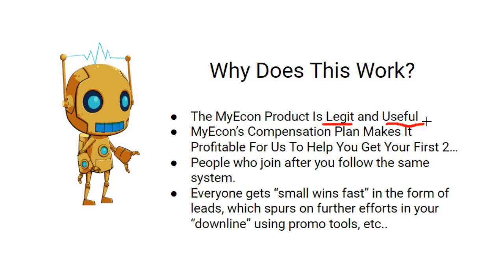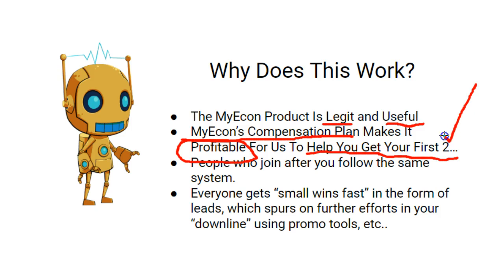It'll help you increase your credit score. It'll help you generate additional cash flow almost right away on your weekly paycheck, and do a bunch of other things that will help make you more financially literate and have financial success both short and long term. The MyEcon compensation plan — the second bullet point — makes it very profitable for us, the Residual Robot team, to actually help you get your first two. Because of the way the compensation plan pays, it's in our self-interest. It makes sense for us to help you get your first two because we'll actually be paid by doing so.